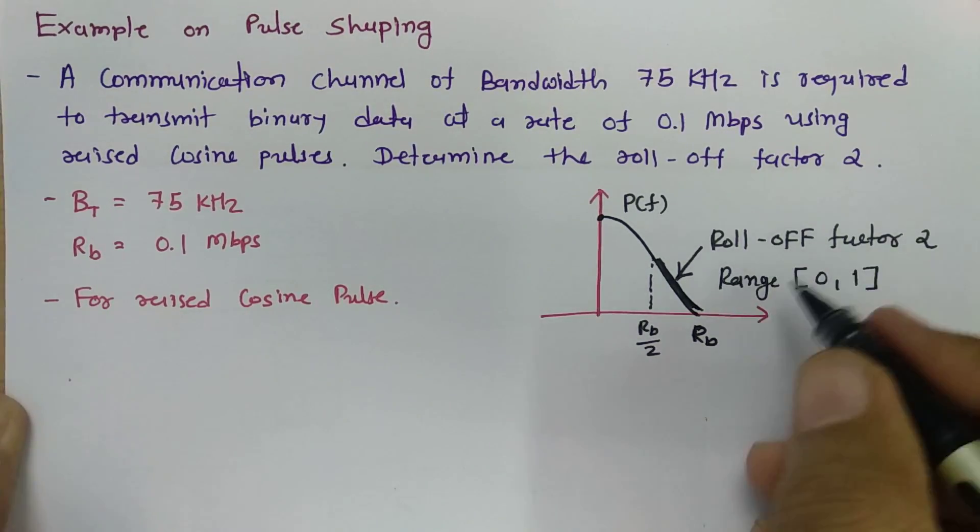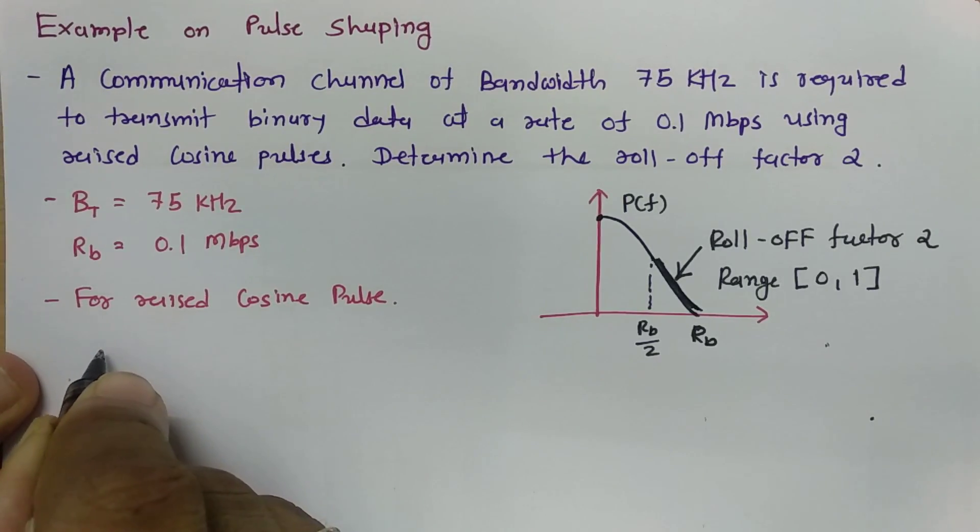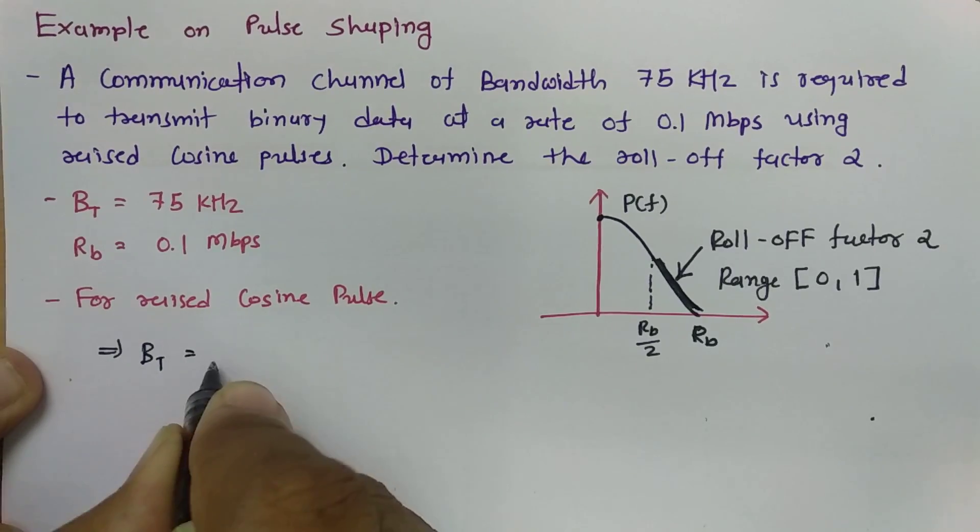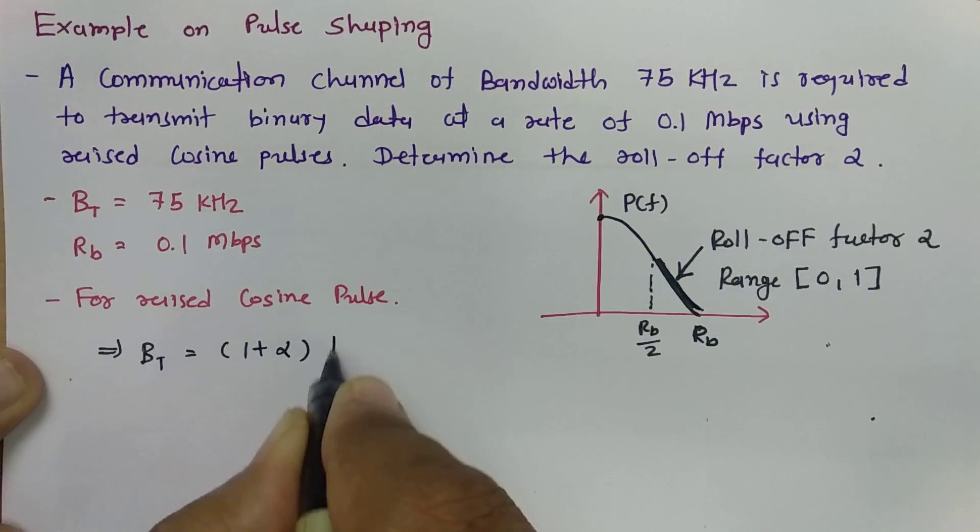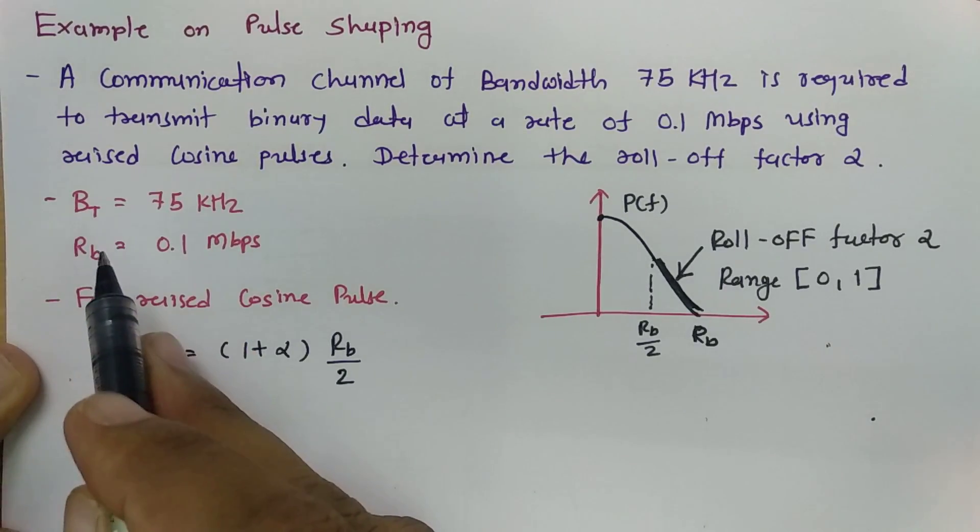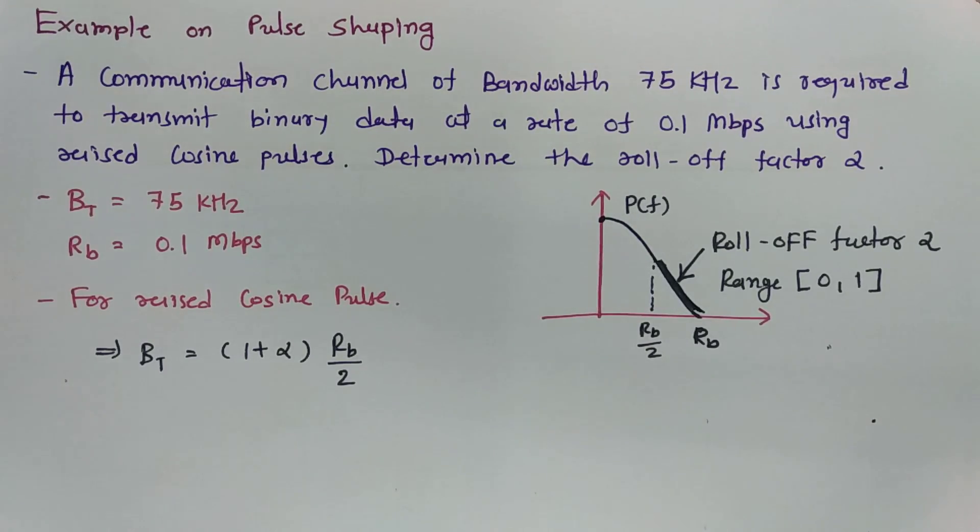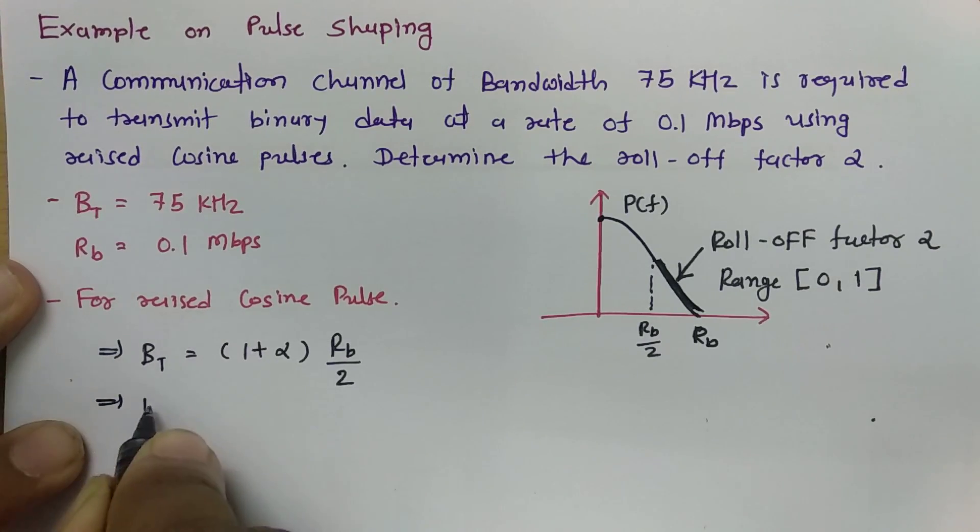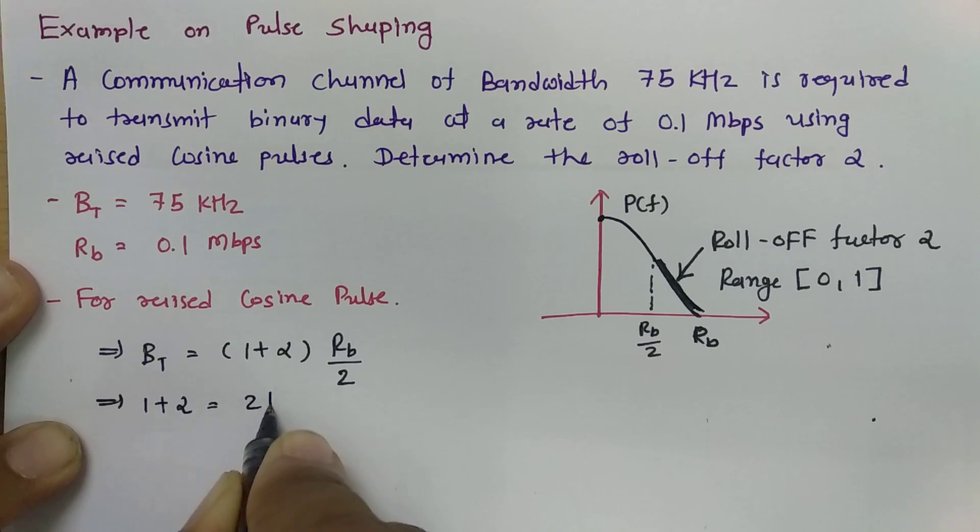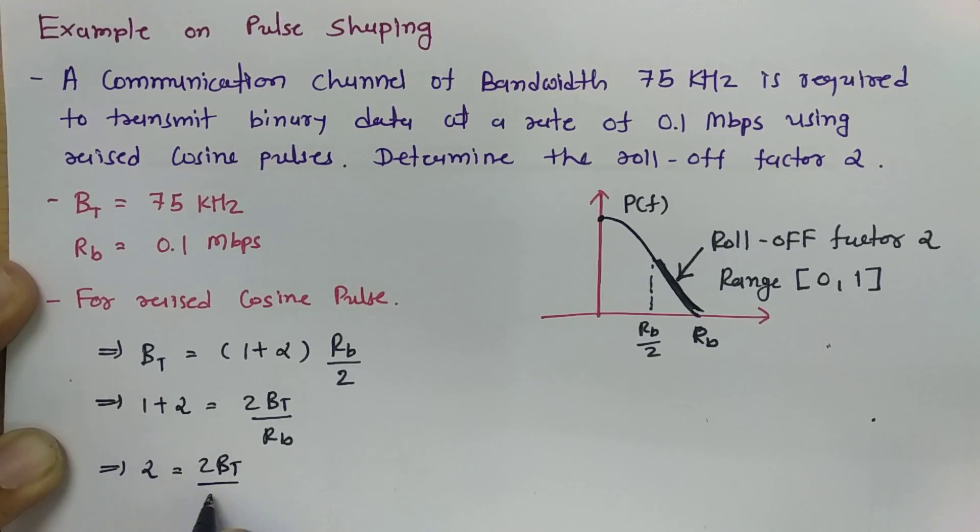So how to calculate this roll-off factor? To have a calculation of this roll-off factor, the basic formula is bandwidth BT equals 1 plus alpha into RB divided by 2. So we have bandwidth as well as data rate RB. So we can have alpha calculation. 1 plus alpha, that will become 2BT divided by RB. So we can say alpha is equals to 2BT divided by RB minus 1.